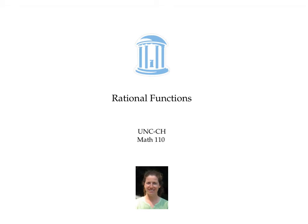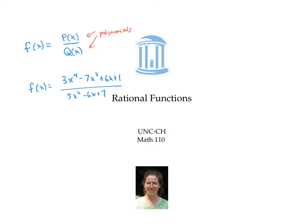This video is about rational functions and their graphs. Recall that a rational function is a function that can be written as a ratio or quotient of two polynomials. Here's an example. The simpler function f of x equals one over x is also considered a rational function — you can think of one and x as very simple polynomials.